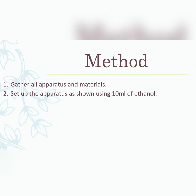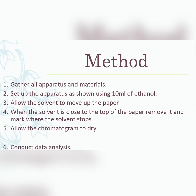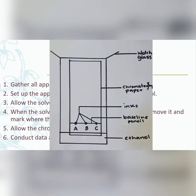For the method: gather your apparatus and materials, then set up the apparatus as shown using 10 mL of ethanol. Allow the solvent to move up the paper, and when the solvent is close to the top, remove it and mark where the solvent stops. Allow the chromatogram to dry, then conduct your data analysis. Your apparatus setup includes a watch glass, a beaker with ethanol as the solvent, the three dyes labeled A, B, and C, a pencil-drawn baseline, and the chromatographic paper.